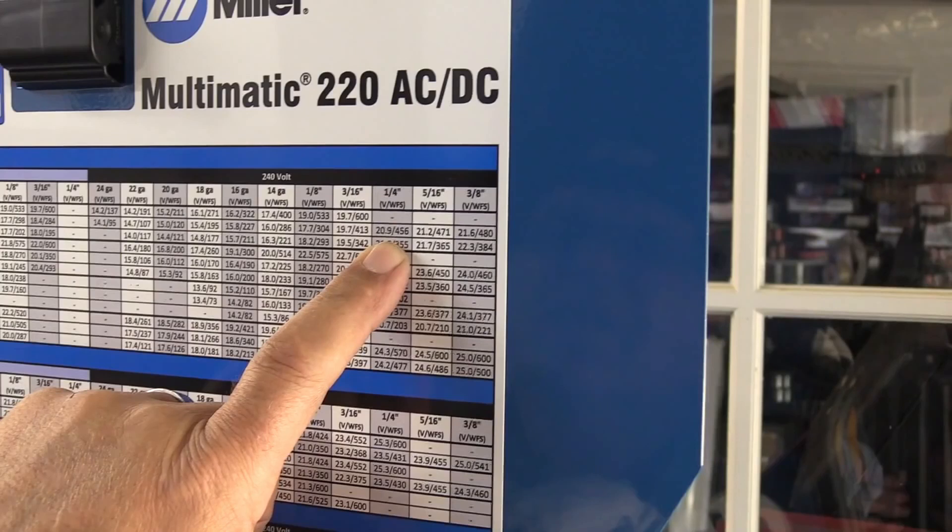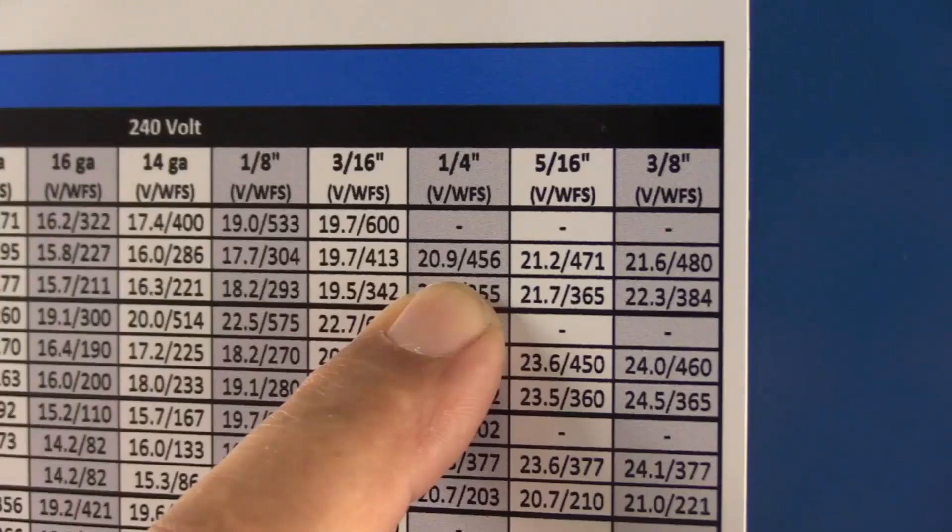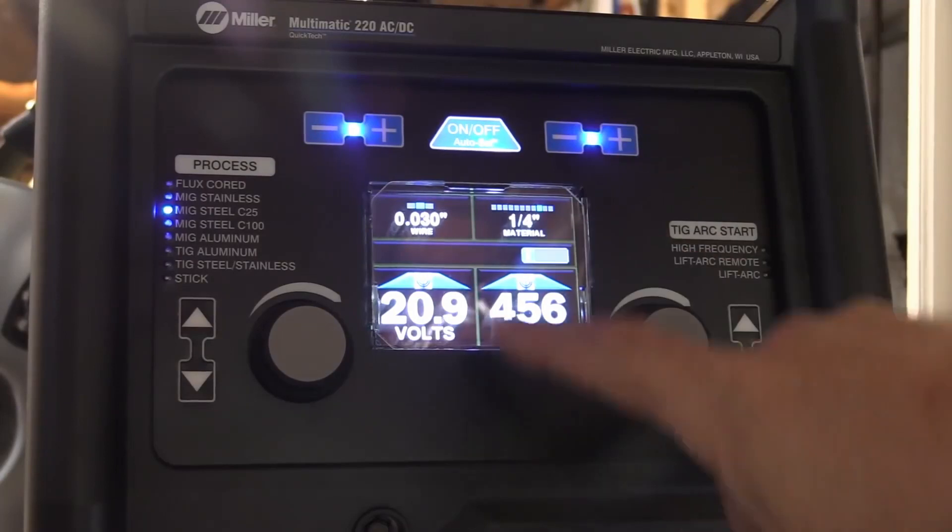Most newer machines have a chart like this for settings on the inside of the wire feeder cabinet. I'm using 0.030" wire today, that's the two-pound spool that came with the machine, and the settings are 20.9 volts, 456 inches a minute for quarter-inch thick material.